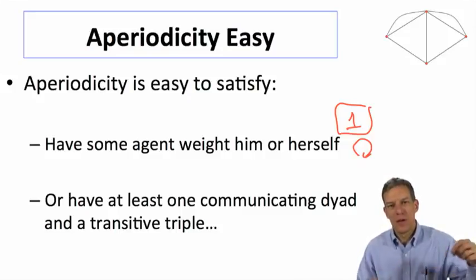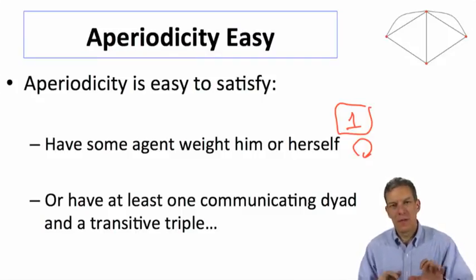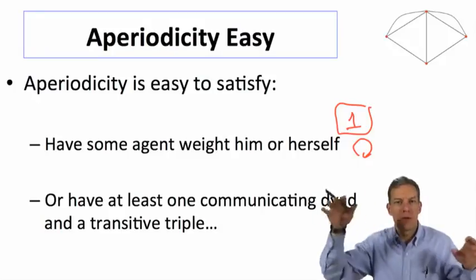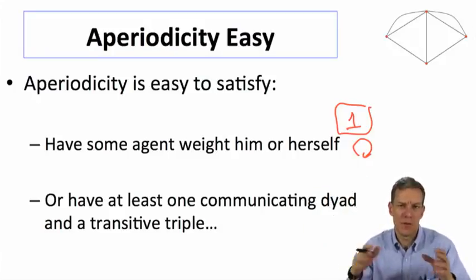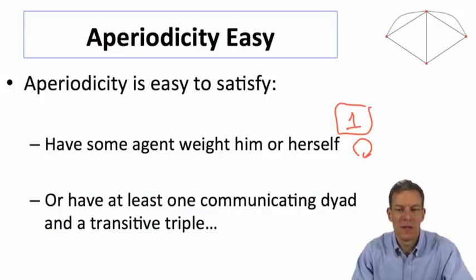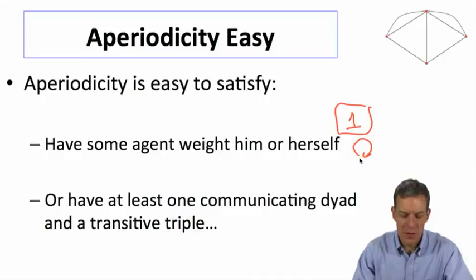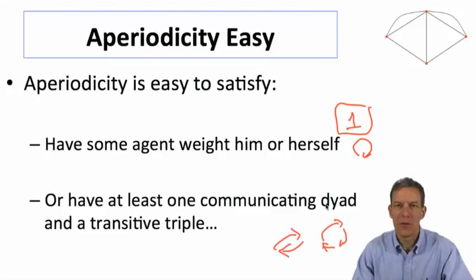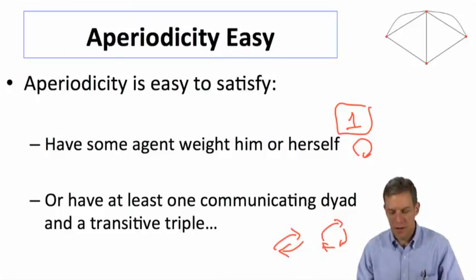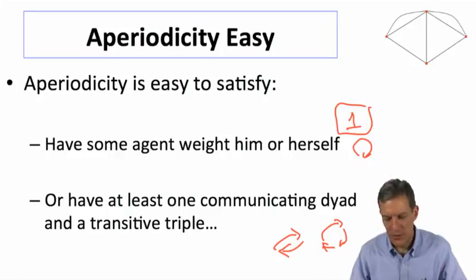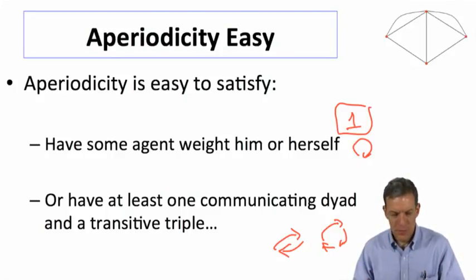The only way we're going to end up with situations where we don't have convergence is that nobody puts weight on themselves, and then we have all cycles being multiples of some cycle length of at least two. And so if we have just person one weighting themselves, or at least one set of people that listen to each other, plus one that involves a triple, that would be enough to have a greatest common divisor of length one. So it's going to be very easy to satisfy aperiodicity, and generically, in some sense, it's going to be the true case.